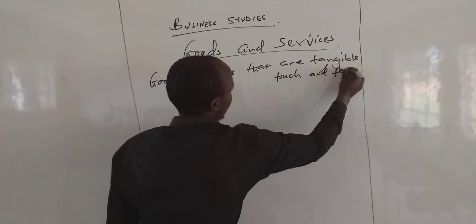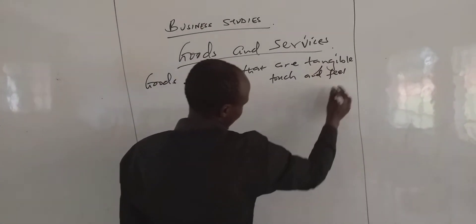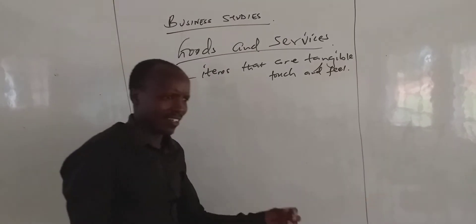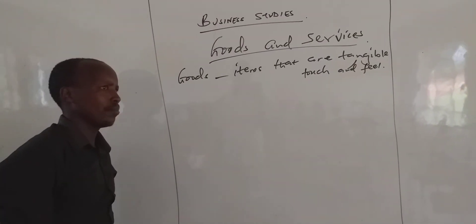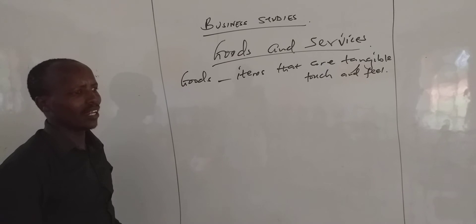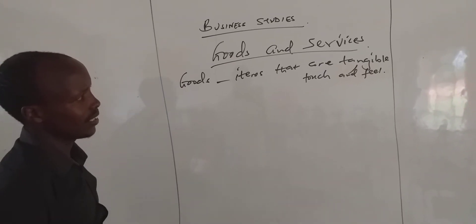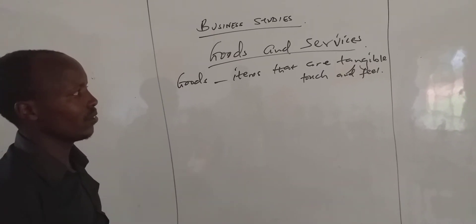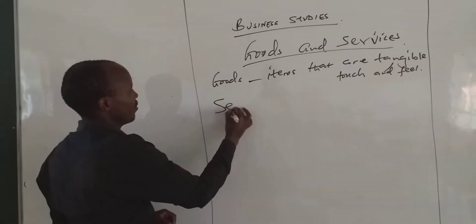Anything you can touch and feel — a pen, a paper, maybe a lock and so forth. Anything which you can touch and feel is what we call goods.